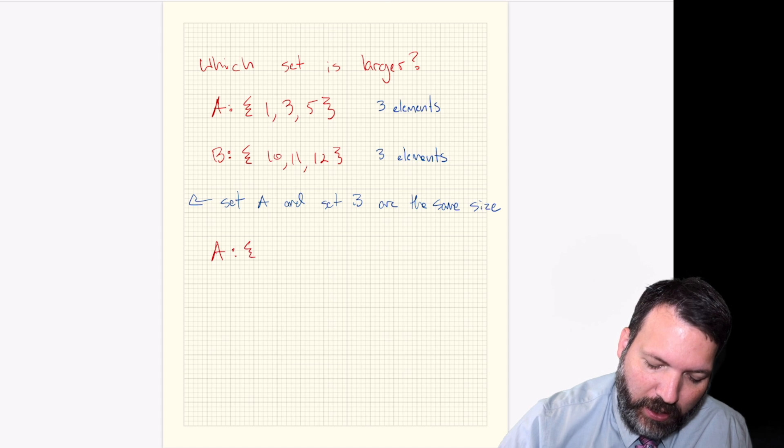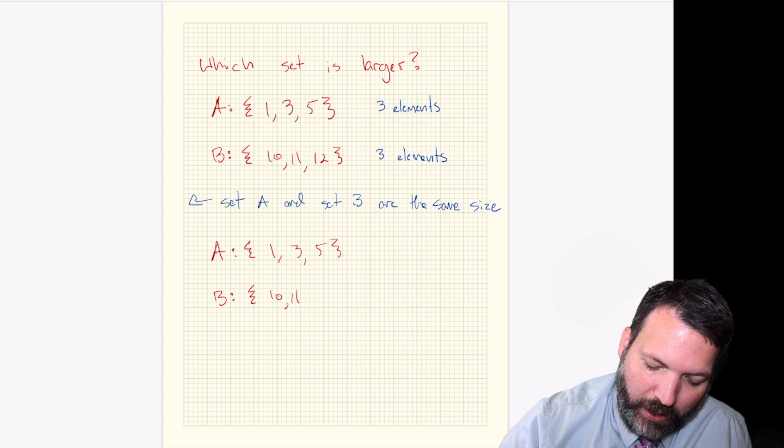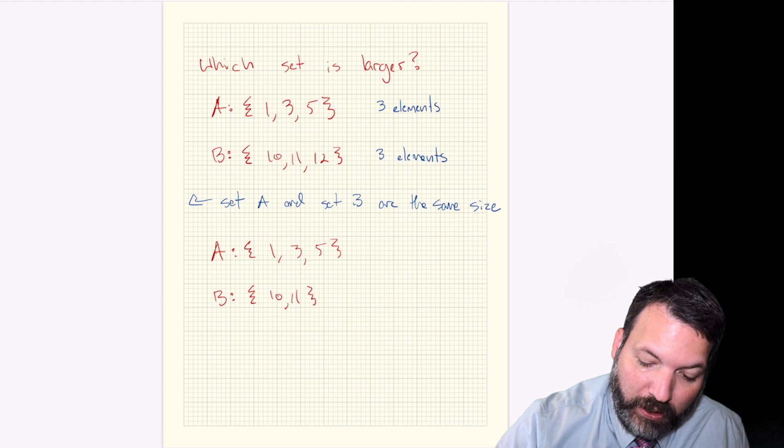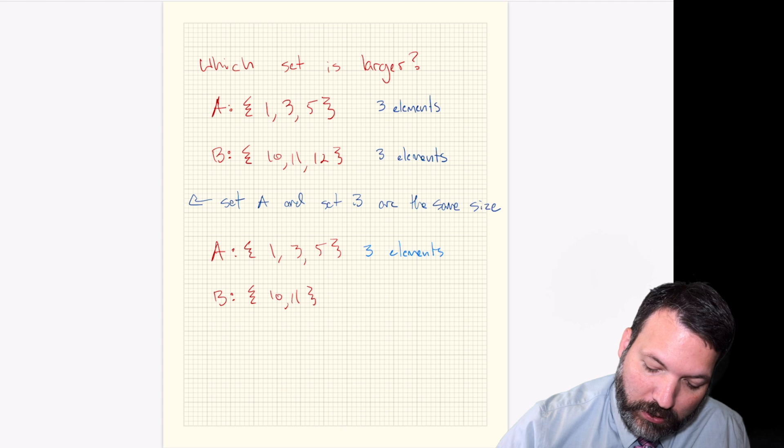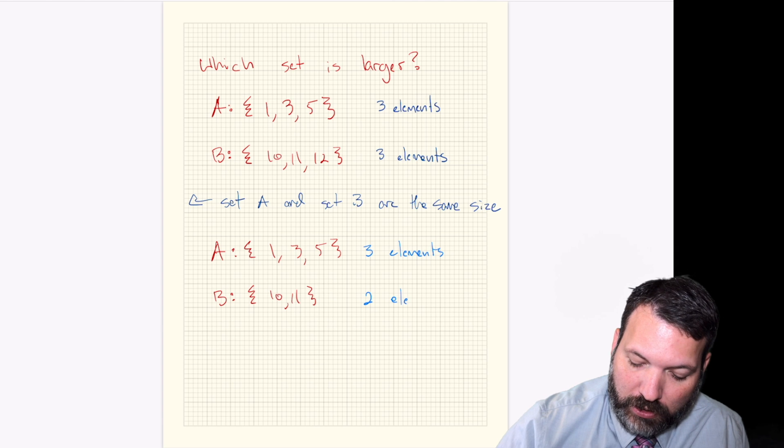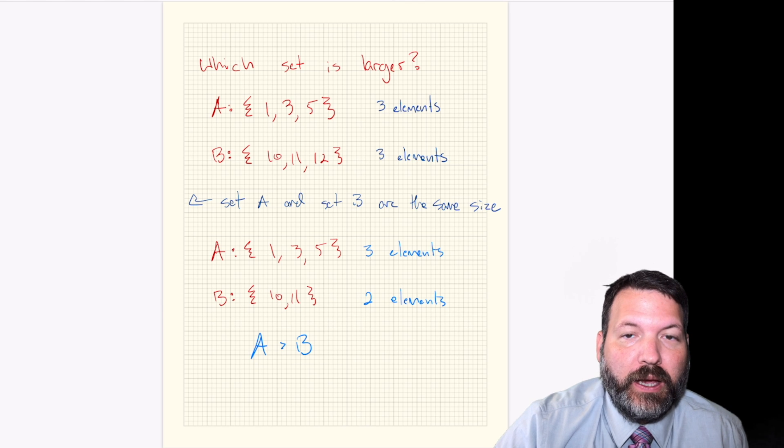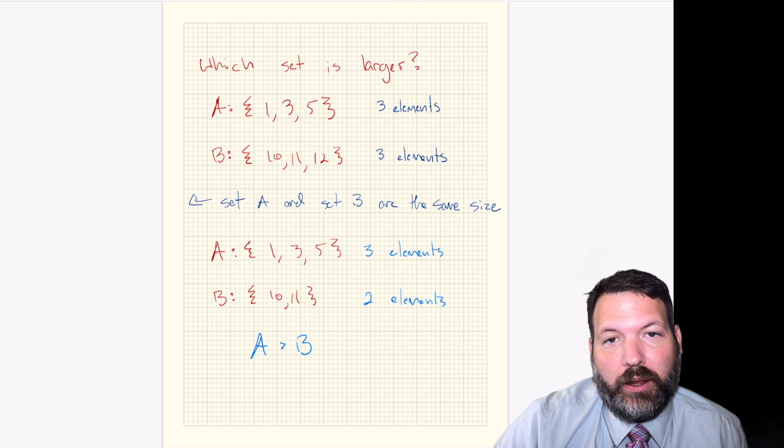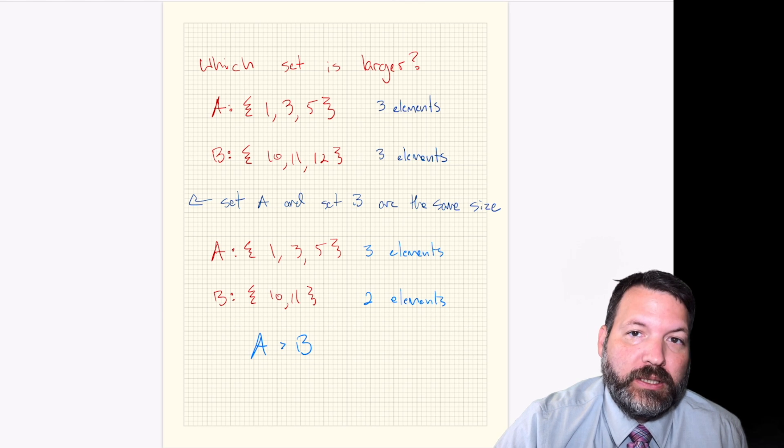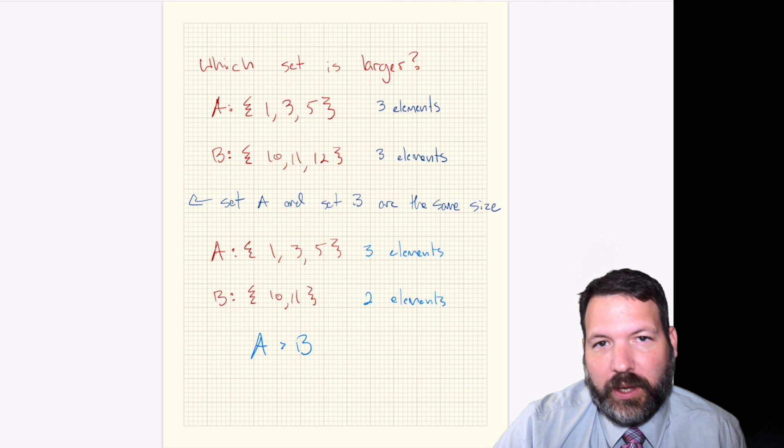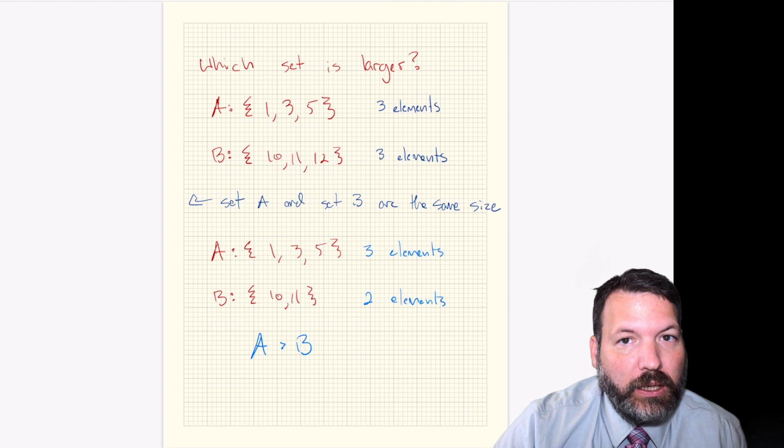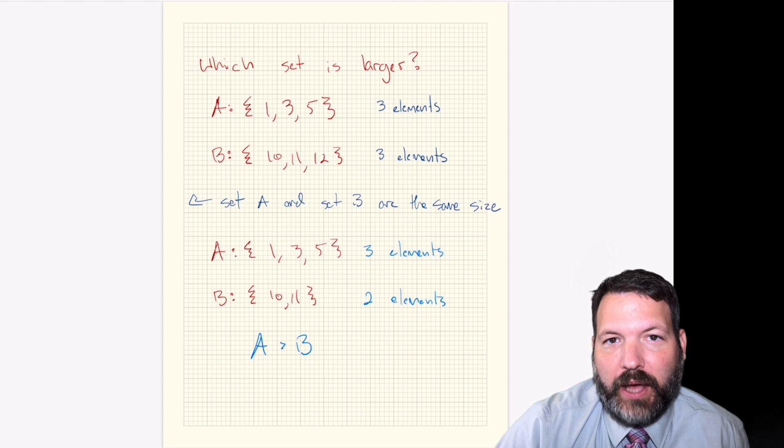What if instead I said, okay, so you've got set A, which is elements 1, 3, and 5, and set B, which is elements 10 and 11. In that case, you might again count them up and say, well, set A still has three elements. Set B now only has two elements. We could say in some sense, set A is larger than set B because it has more elements. Three elements is a larger number of elements than two elements is. And if we can just count up the number of elements pretty quickly, then that's no problem.